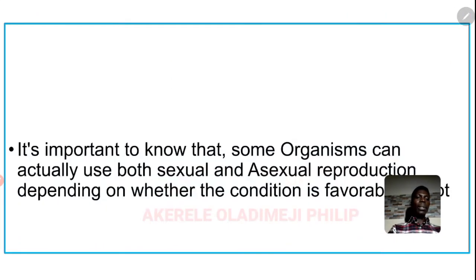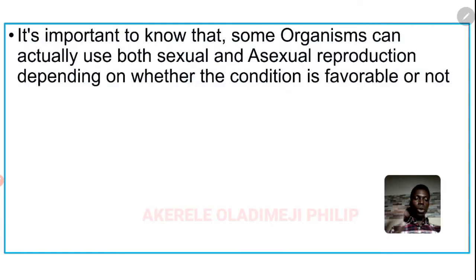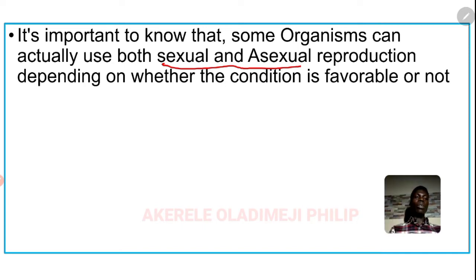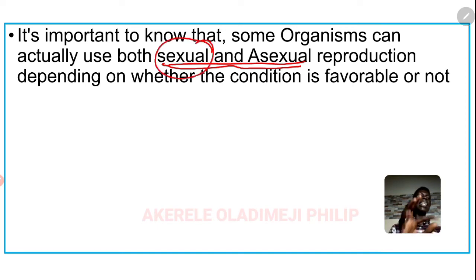It is important to know that some organisms can carry out both sexual reproduction and asexual reproduction, depending on whether conditions are favorable or not. Most organisms that do both will prefer to use sexual reproduction, but when the environment is not favorable they switch to asexual reproduction. Let's look at some examples.